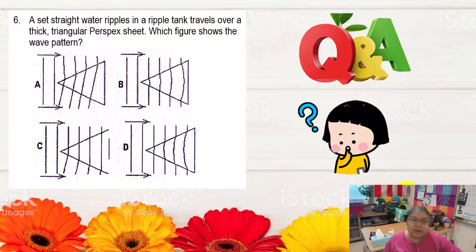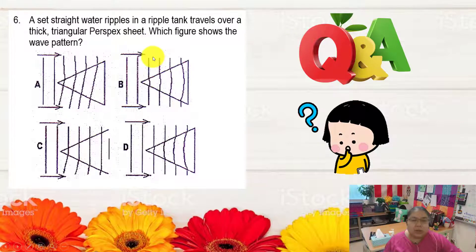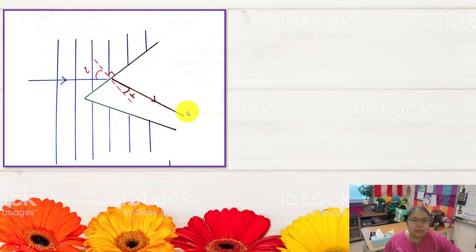This is question six. There's a set of straight water waves in a ripple tank that travel over a thick triangular perspective. We need to determine which pattern is correct. From here, we need to prove why the answer should be D.